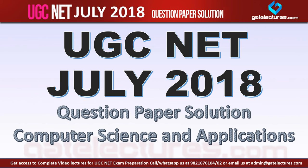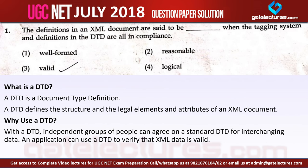Hello everyone. In this video we will be looking at the video solutions of UGC NET July 2018 question papers. I am solving the question paper for Computer Science and Applications. We will make one video for every question — for example, this video I am going to take question number 1, and in the next video I will solve question number 2. For every question I try to give the reasoning for what is the correct answer.